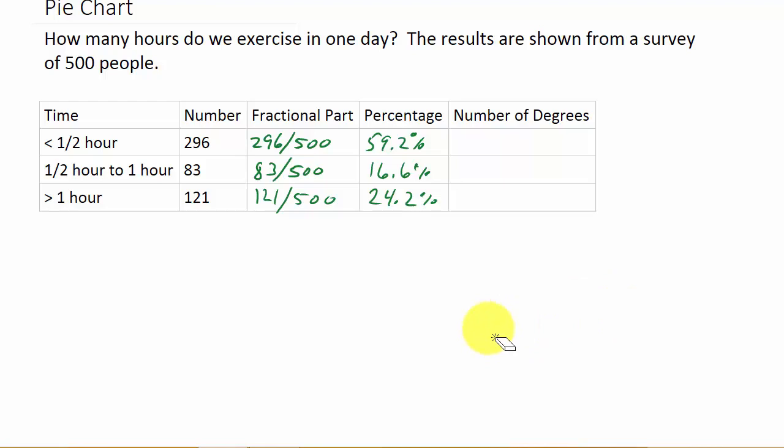Now we need to figure out the number of degrees. To figure out the number of degrees, we multiply the percentage by 360 and that will give us the number of degrees. So when I multiply the percentage times the number of degrees, I'm going to have the percentage in decimal, so that would be .592 times 360 degrees. .592 times 360, that gives me 213.12.